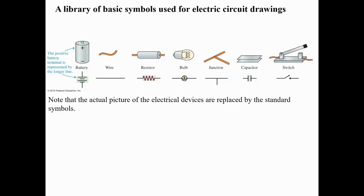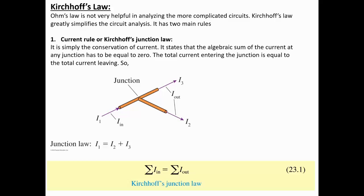These are some standard symbols for all components in an electrical circuit. The battery symbol, the straight line for wire, the resistor symbol, the electrical bulb symbol, a wire junction, the capacitor shown as parallel plates, and the switch to turn the circuit on and off — these are the standard circuit components you will commonly see.